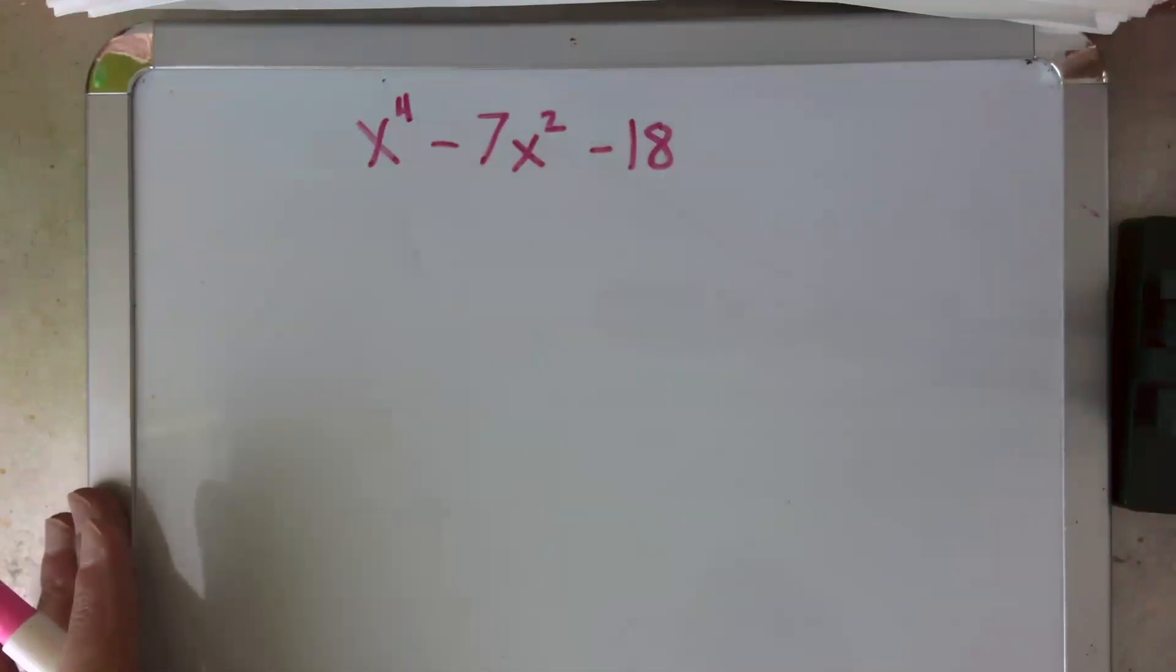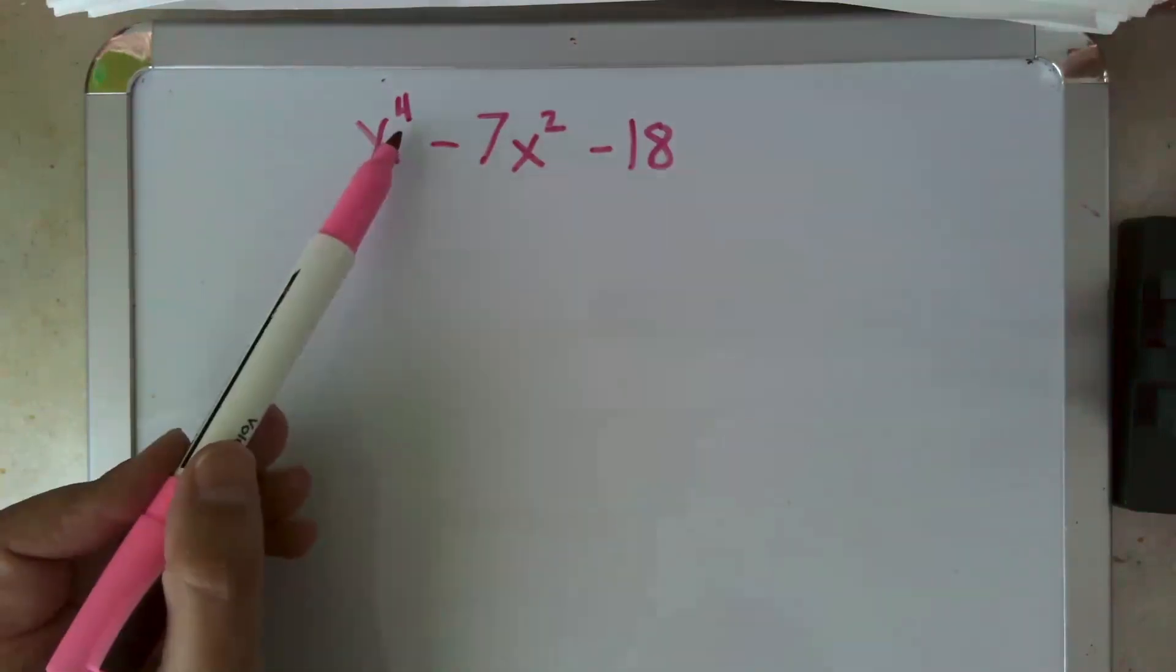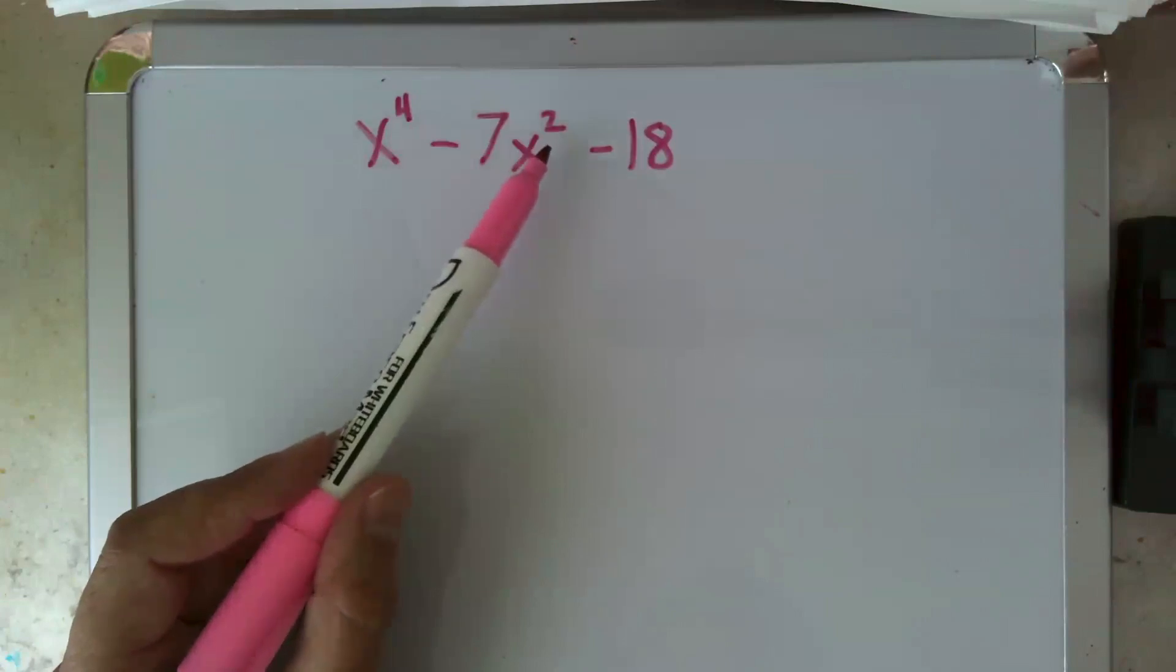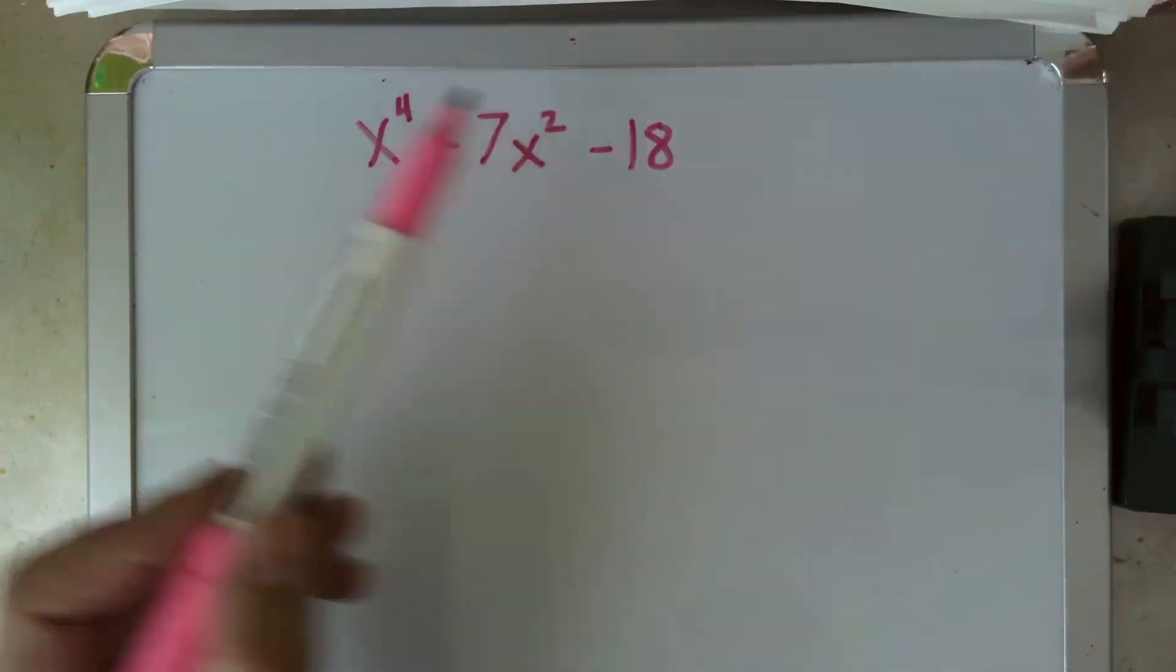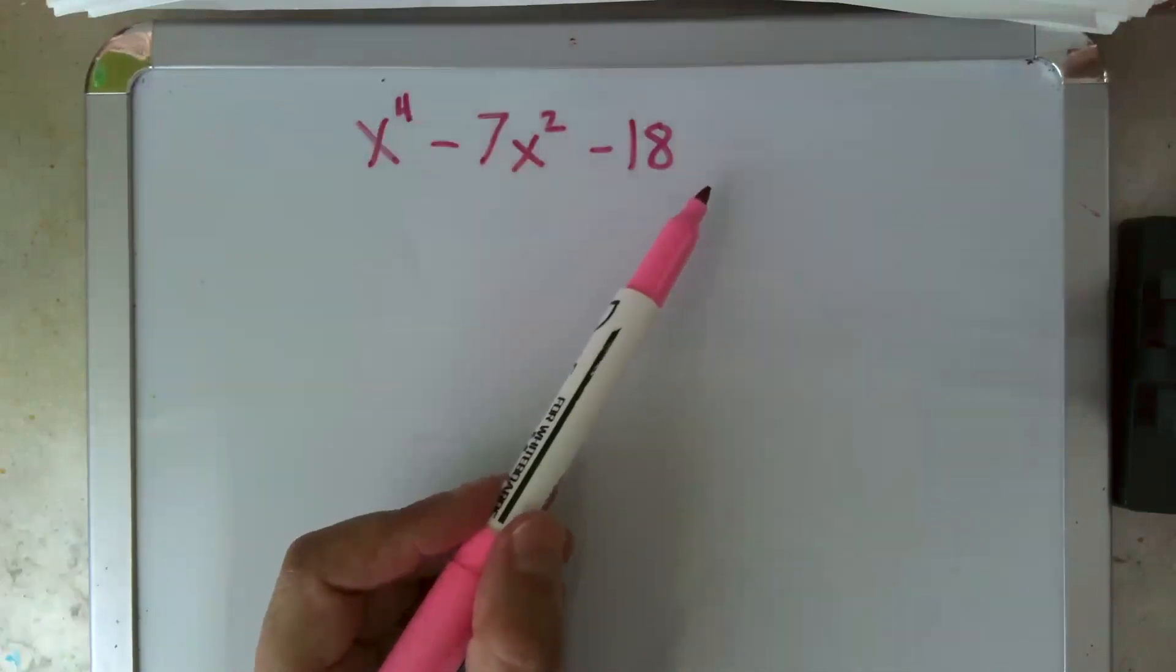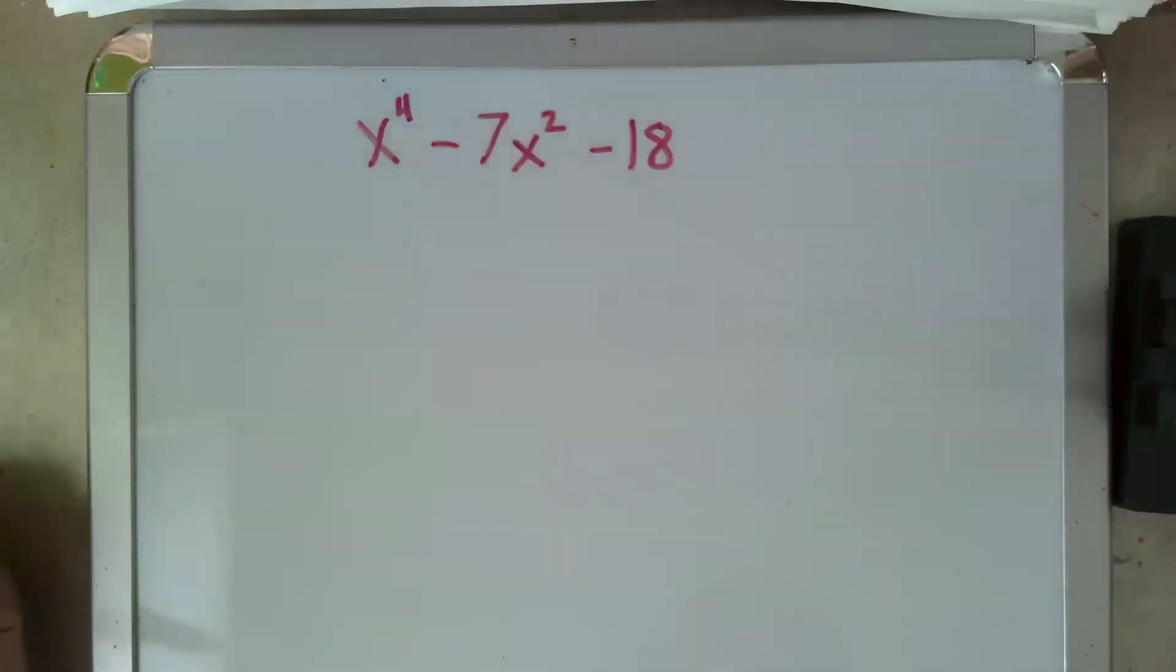So here's the first thing to note. If the degree of your leading term is even, and the degree of your second term is half of that, and the degree of your third term is 0, meaning the x term is missing, you can go ahead and apply the x method just like you would with a quadratic.